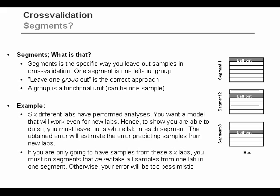When you have all six labs included, you would imagine that you could extract more components, because you know exactly what labs you are using. Any significant systematic variation from those labs can be included in the model. But in the other situation, where you want to predict samples from labs you don't know, you don't have that information available, and likely you will end up with fewer components and maybe worse predictions — but those are the predictions you can expect when predicting new samples from new labs.